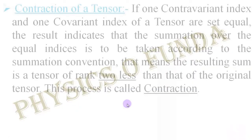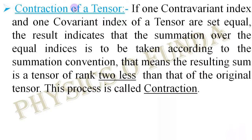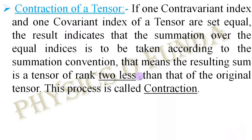Let us first see what contraction of a tensor is. If one contravariant index and one covariant index of a tensor are equal, then we get the resulting tensor by following the summation convention over equal indices. The identical indices should be dropped and we get a resulting tensor of rank lowered by 2 from the original tensor. This process is called contraction.